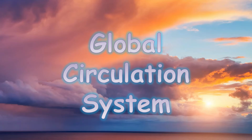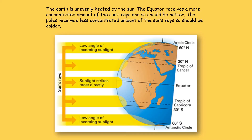The global circulation system. Earth is unevenly heated by the sun. The equator receives a more concentrated amount of the sun's rays and so is hotter than the poles, which receive a less concentrated amount. The extra heat that goes to the equator is redistributed around the world by the ocean currents and also by wind, through air masses moving this heat away from the equator.